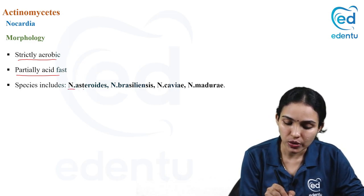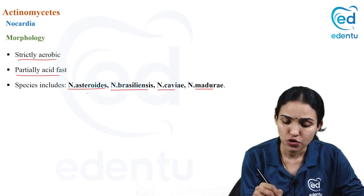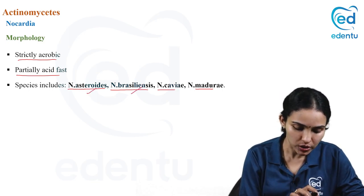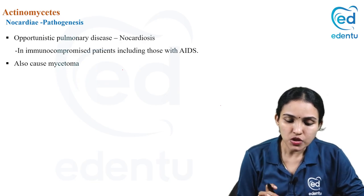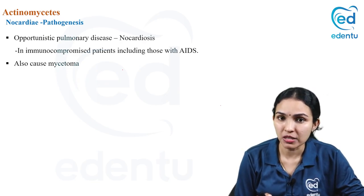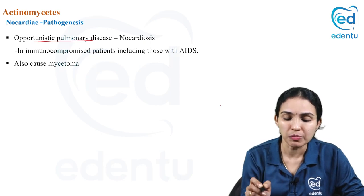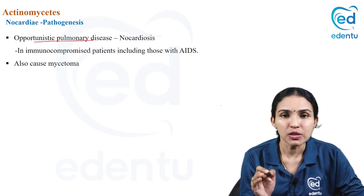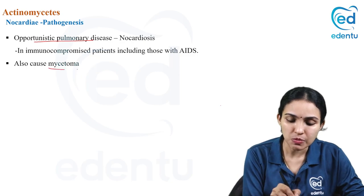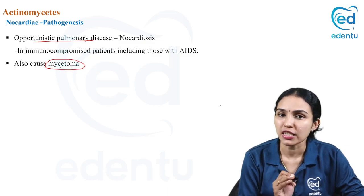The most important species of nocardia are Nocardia asteroides, Nocardia brasiliensis, Nocardia caviae, and Nocardia madurae — remember at least asteroides and brasiliensis. Nocardia is primarily a pulmonary pathogen, commonly causing pulmonary disease in immunocompromised patients such as those with AIDS — it is an opportunistic pulmonary pathogen. In addition, nocardia can cause mycetoma, a chronic granulomatous lesion similar to that caused by fungi.